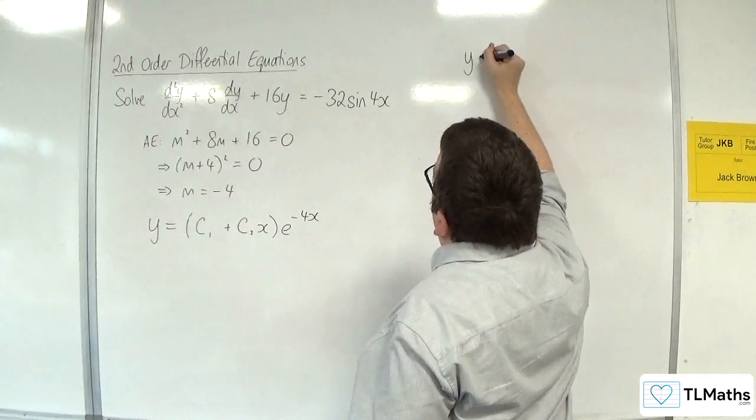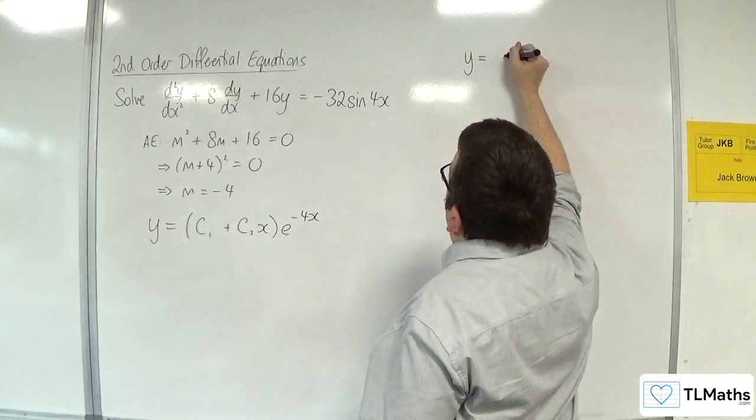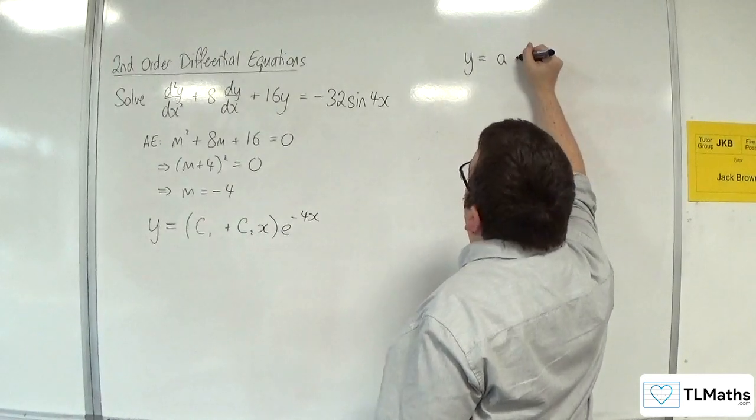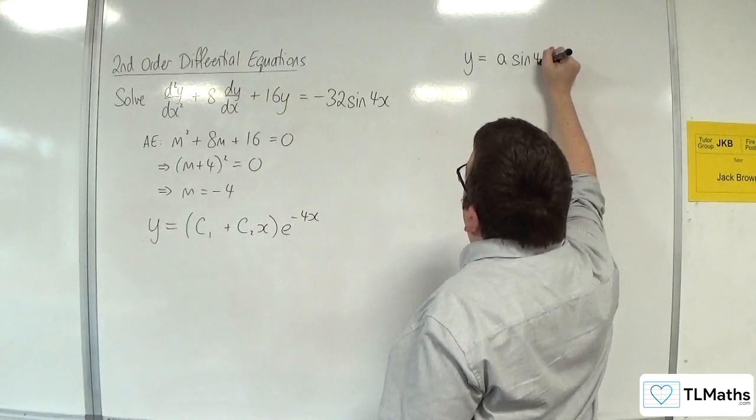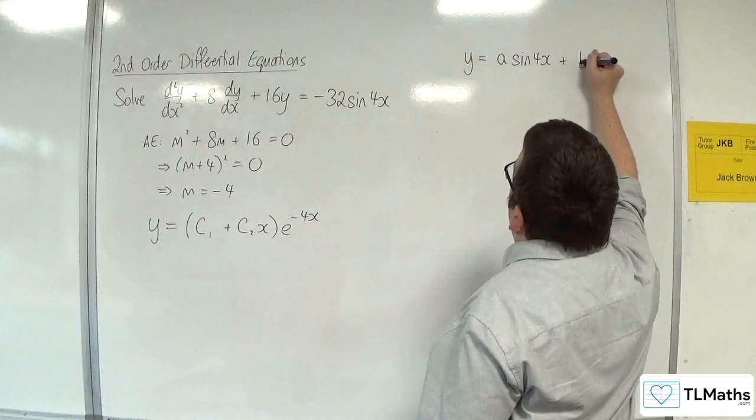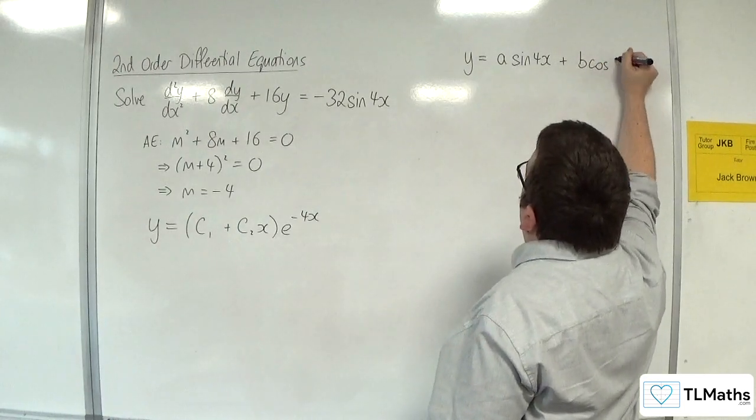So the trial function would be y = a sin(4x) + b cos(4x).